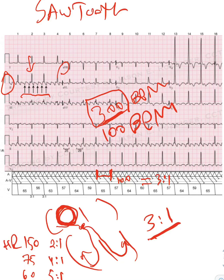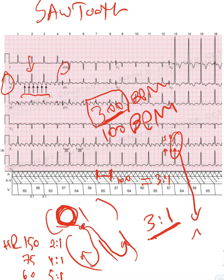Some people try to count flutter waves directly, and sometimes it's difficult. There is actually a flutter wave hidden over the QRS complex — that's the flutter wave you're missing. So you have flutter wave number one, number two, and then a flutter wave sitting on top of a QRS complex. That's why the count can be tricky — one flutter wave is buried within the QRS.